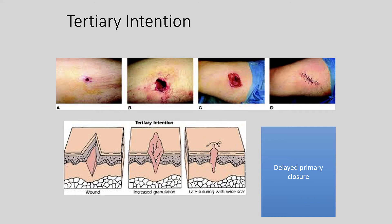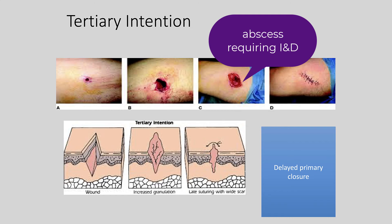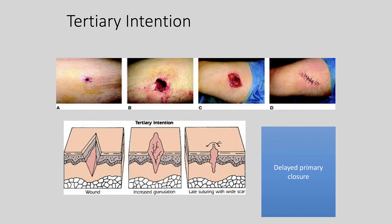Tertiary intention is simply delayed wound closure — the wound is closed after being left open for a period of time. This is most commonly seen with an incision and drainage (I&D). When you have an abscess, you open it, clean out the bacteria and purulent drainage, leave it open to granulate, and then close it surgically at a later point.